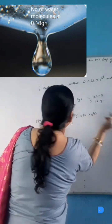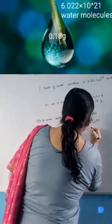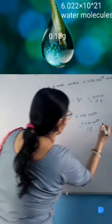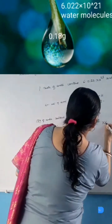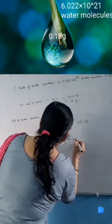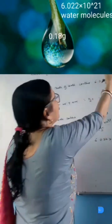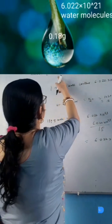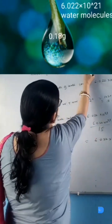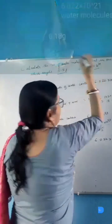So 1 gram of water will contain 6.022 into 10 to the power 23 divided by 18 gram. It is given that 0.18 gram of water will contain 6.022 into 10 to the power 21. So we can say that 1 drop of water which weighs 0.18 gram contains 6.022 into 10 to the power 21 water molecules.